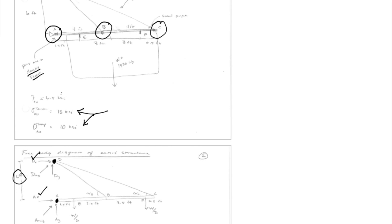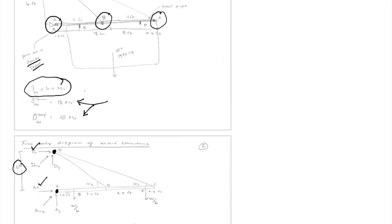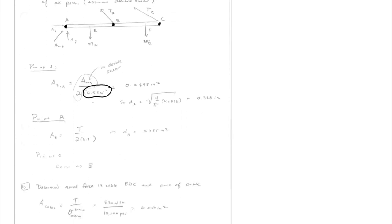We'll do the pin at A first, then pins at B and C. The tension at B and C are equivalent because of the frictionless pulley. For the pin at A, we take the resultant force and divide by the allowable shear stress — tau allowable — which was given as the maximum allowable value. The area of the pin equals the resultant force at A divided by tau allowable.